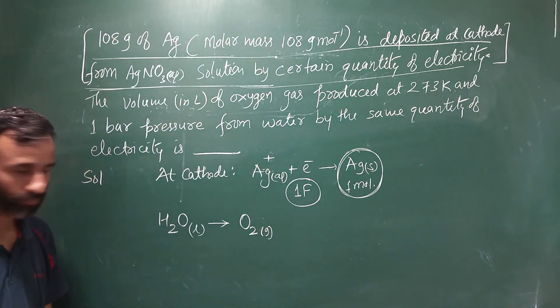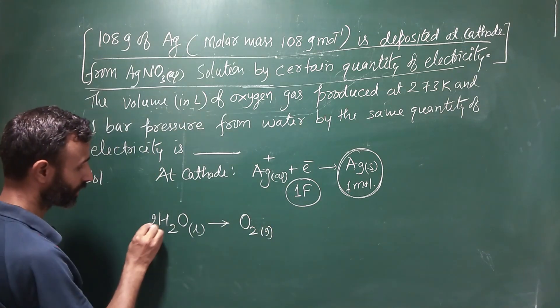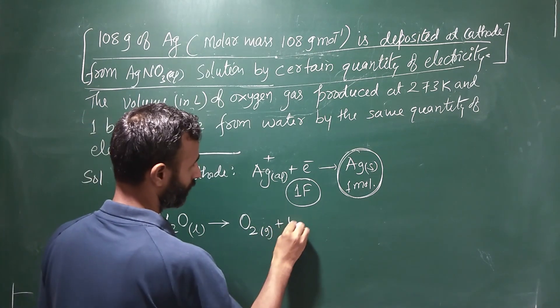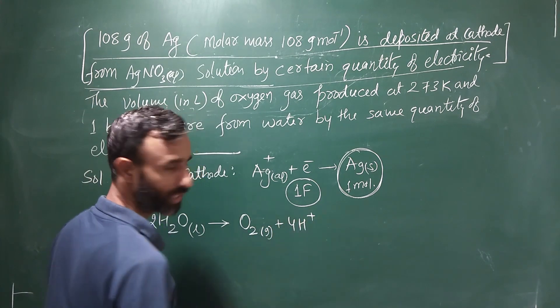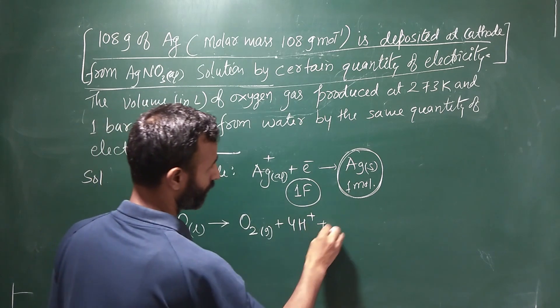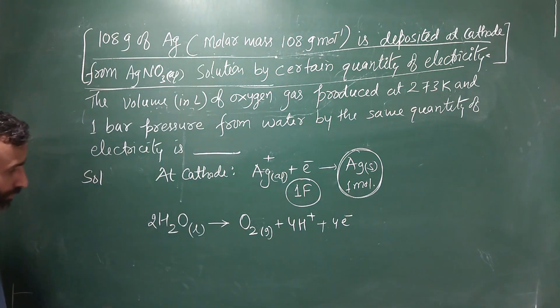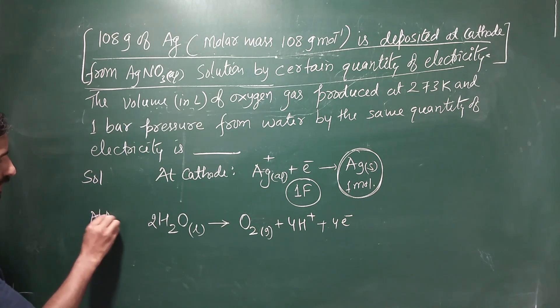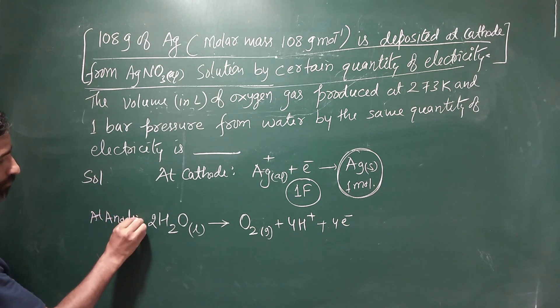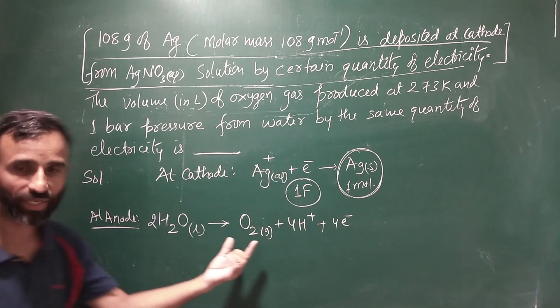O2 gas. So, O2 gas के लिए 4H plus 4 electron. At anode अगर react करे, is it oxygen gas बनेगे ने?